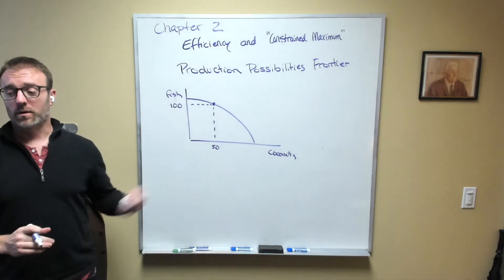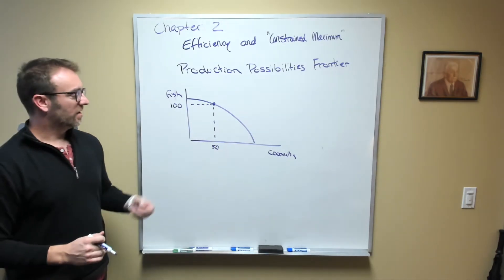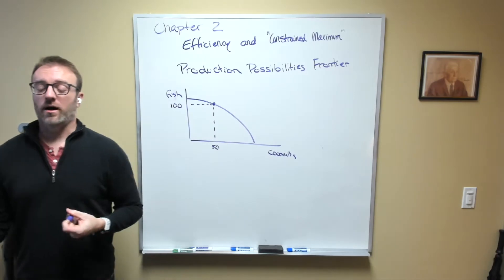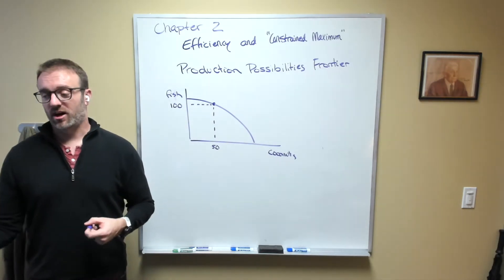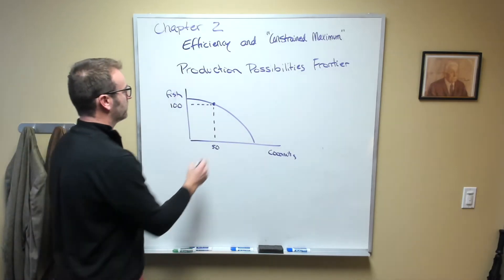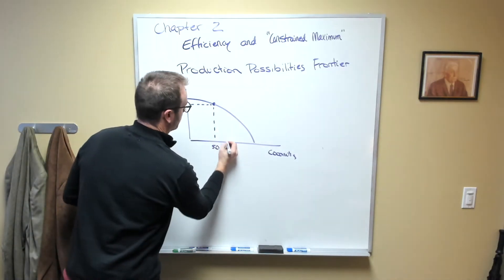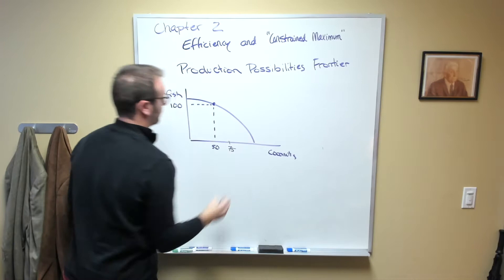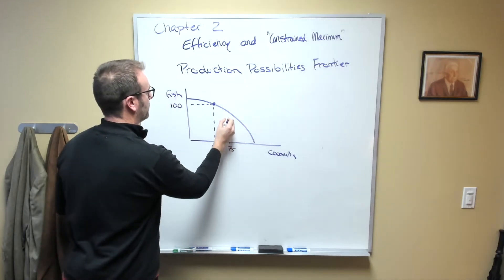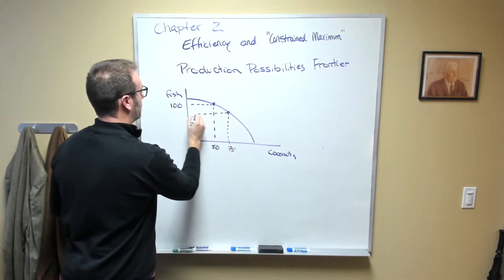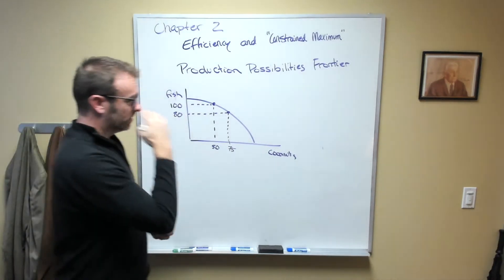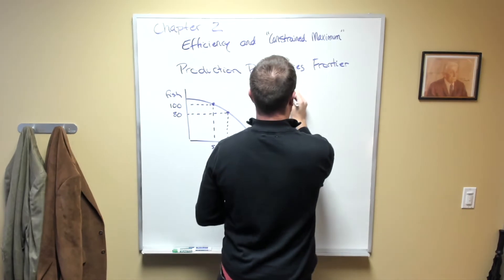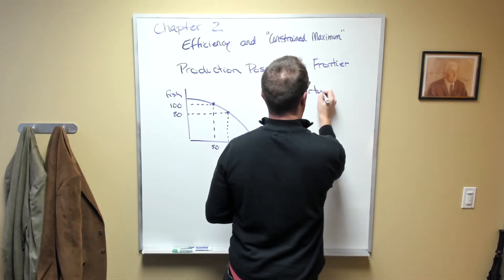If I wanted to have more coconuts, that would mean I would have to dedicate more time toward harvesting coconuts, which means I would have less time available to catch fish. So if I wanted to get to let's say 75 coconuts, that means I would only be able to catch maybe 80 fish. In other words, what this is referring to is this concept that we call opportunity cost.